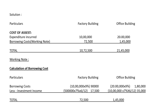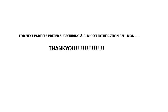So the final answers are: borrowing cost to be capitalized — factory building Rs. 72,500, office building Rs. 1,45,000. Total cost of asset — factory building Rs. 10,72,500, office building Rs. 21,45,000. This is your answer for the problem sum. Just remember the format. In the next part I will show you the next problem in this series — please subscribe and click the notification bell icon. Thank you.